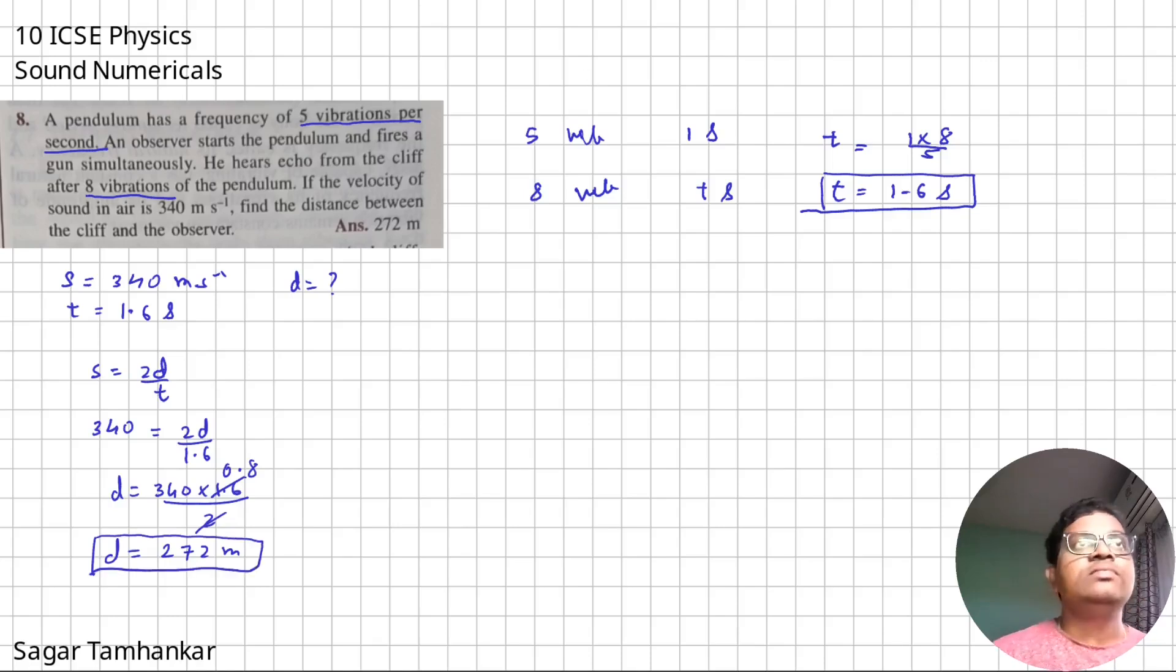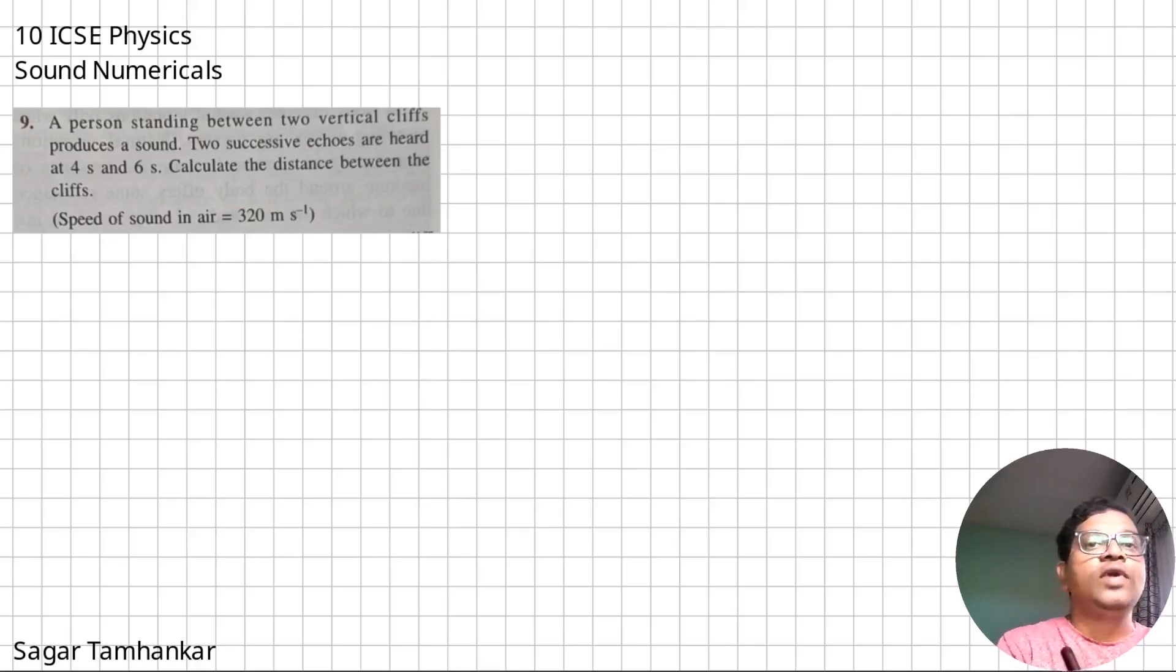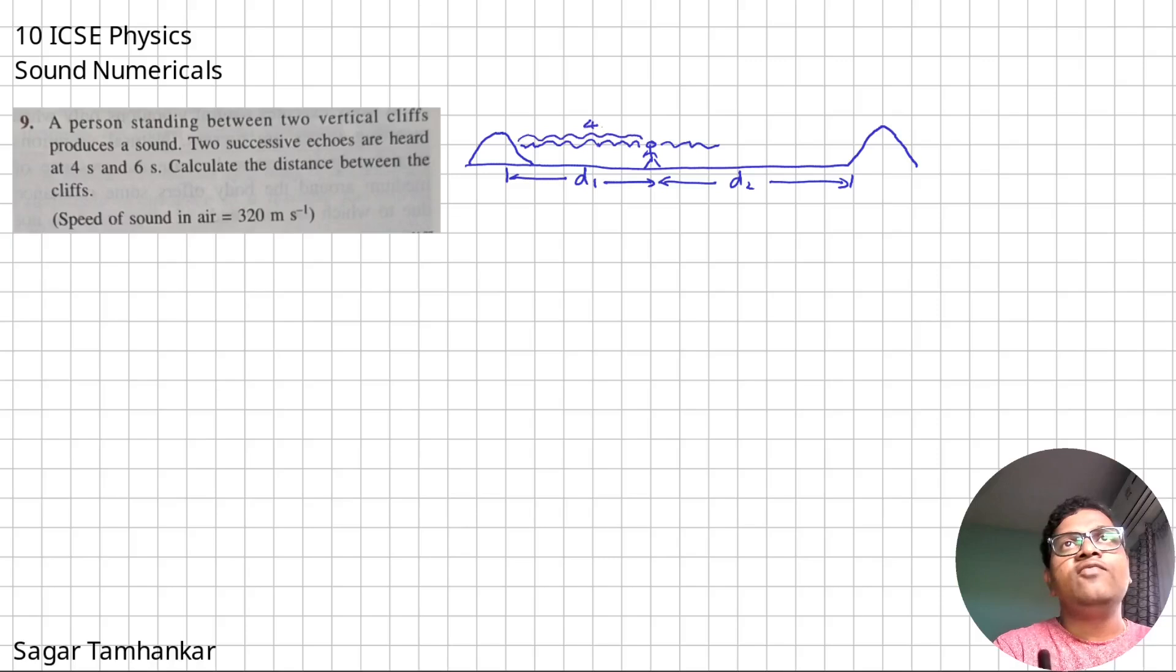Let's move to the next question. In this question, what information is given? The person is standing between two cliffs. So let's say this is a cliff, and this is another cliff, and the person is standing between the two. So the person is standing at a distance of D1 from the first cliff.